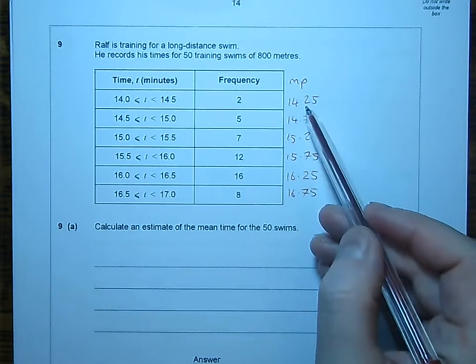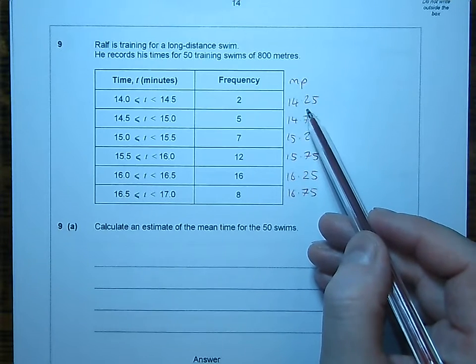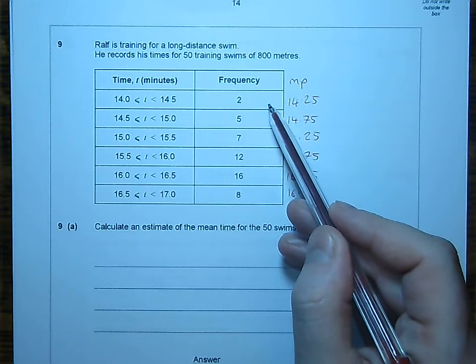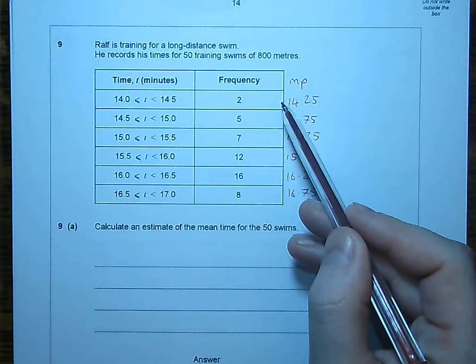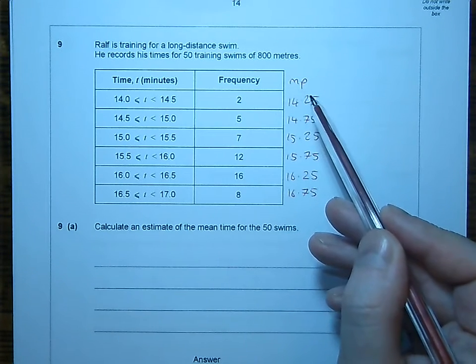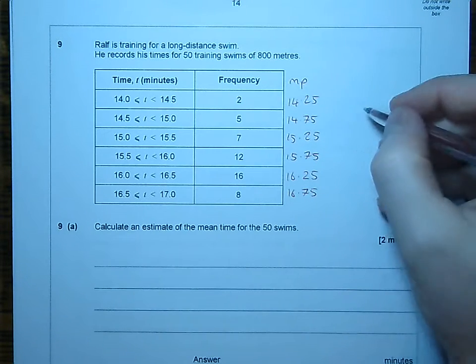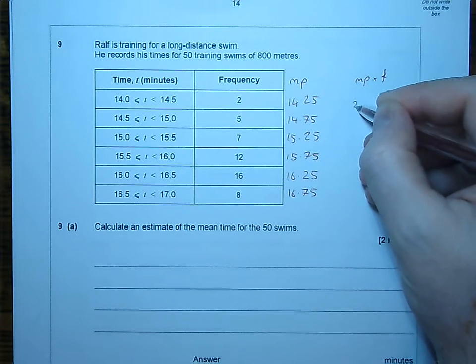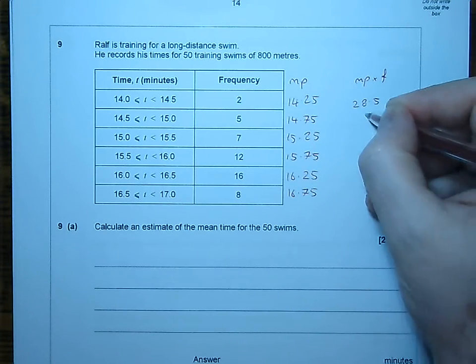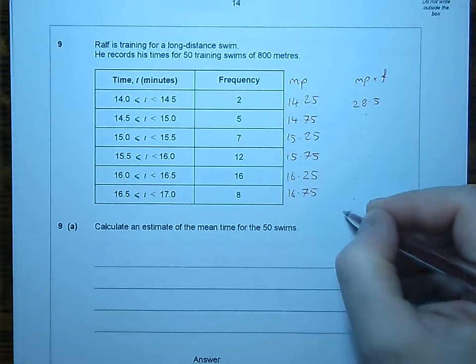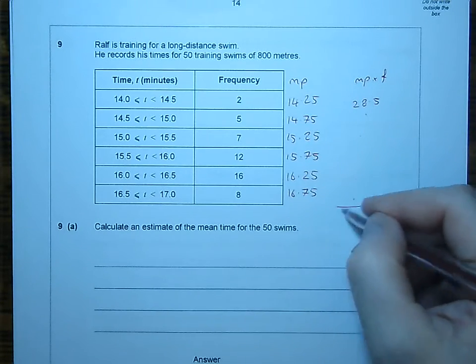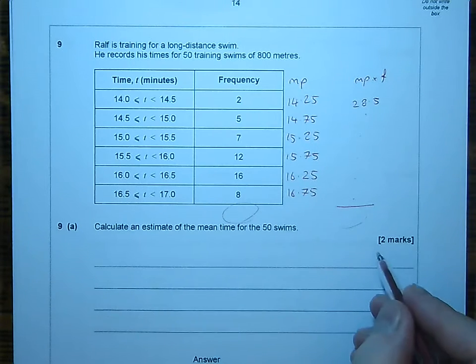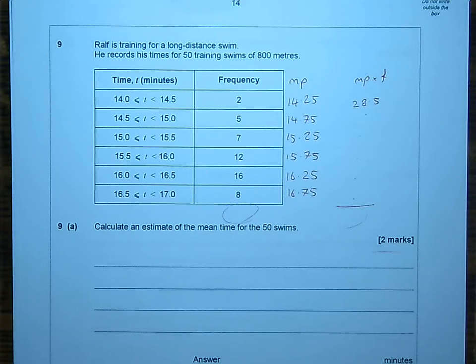Now that I've got the midpoints, if I was going to work this out manually, I would multiply each of these midpoints by the frequency. So 14.25 times by 2 is going to give me 28.5. Midpoint times frequency, 28.5. And I would do that for each of these. And then I would add those up, and I would divide by 50. But for two marks, that's an awful lot of work. And also, we've got one of these.